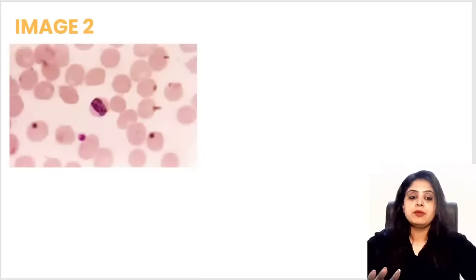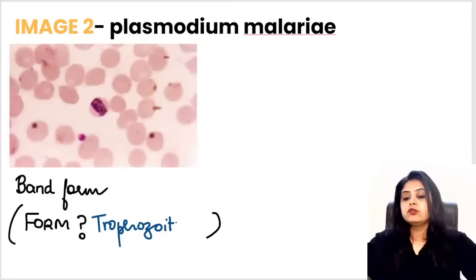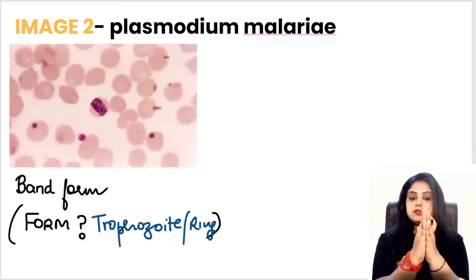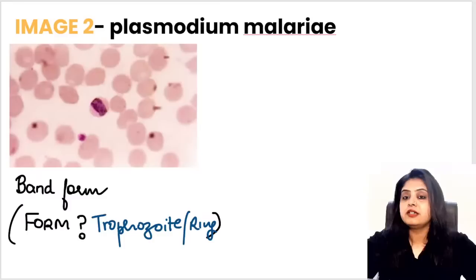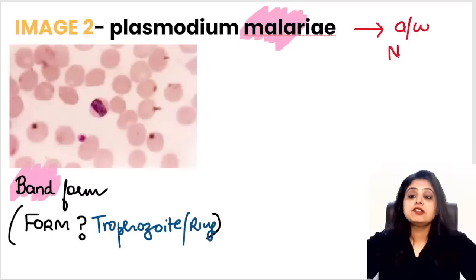Image number two — these are spotters, they don't require any history. If history is given in the exam, that's a bonus, but usually these are classical spotters. This one has a lot of red blood cells, so it's definitely a hematozoa. Everyone is saying band form. Band form is actually a trophozoite, but it's not looking like a ring — the ring has been squeezed and crushed, so it now looks like a band. We call it band form, and 'mala-band' means Plasmodium malariae shows the band form.